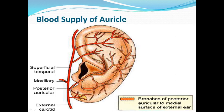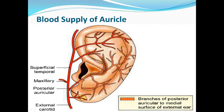Talking about blood supply of the auricle: you can trace in this figure that the auricle is basically supplied by the posterior auricular artery and the superficial temporal artery. The posterior surface or medial surface is supplied by the posterior auricular artery, and the outer surface or lateral surface is supplied by the superficial temporal artery.